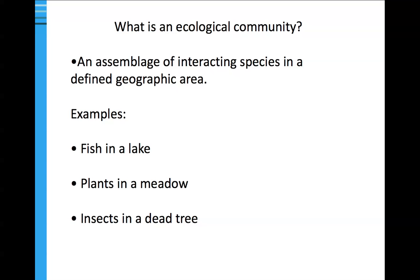As you recall from the beginning of the semester in the field portion of the course, we talked about alpha diversity, beta diversity, and gamma diversity. Alpha diversity is the diversity within a plot or within a community. Beta diversity is the change in diversity between communities or between plots. Gamma diversity is the overall diversity within an area or among a group of interacting communities or over a whole bunch of plots.